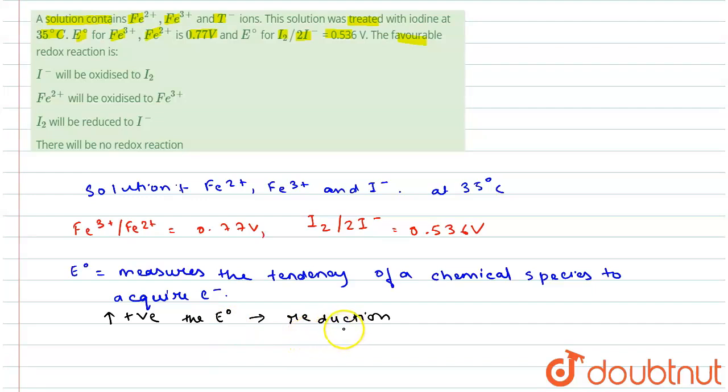Reduction potential for Fe3+ to Fe2+ is 0.77V while iodine is 0.536V.